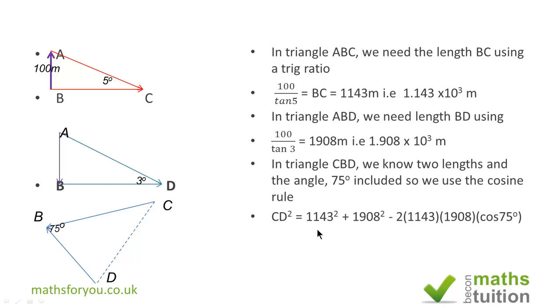Applying the cosine rule, we've got that CD² equals 3,818,025. In standard form, that would be 3.818025 × 10⁶ meters squared.